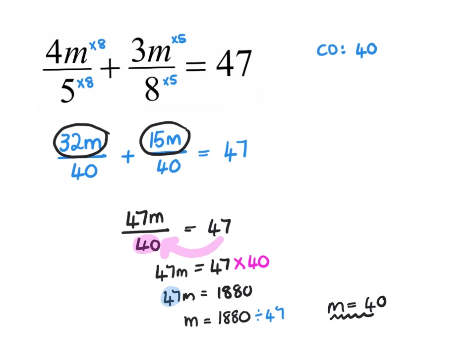No surprise that the answer is m equals 40, since we had 47 times 40 earlier. In other words, 1880 divided by 47 gives 40 again — you were actually able to see the answer a little bit earlier. And that's more advanced equations with fractions.